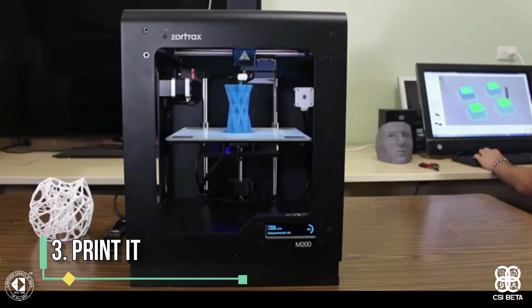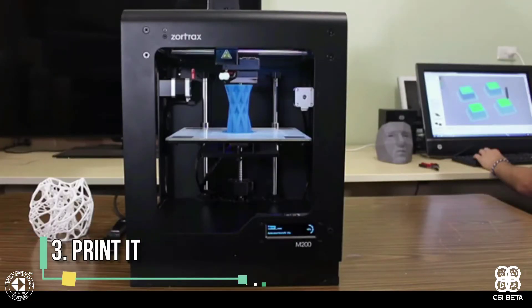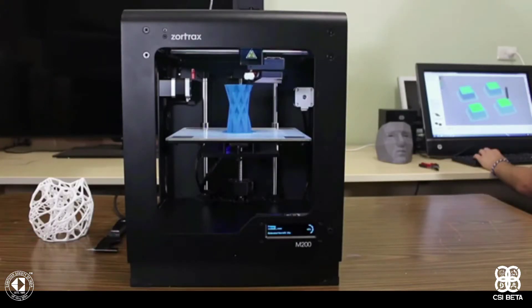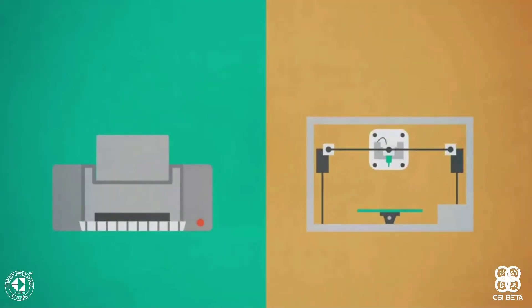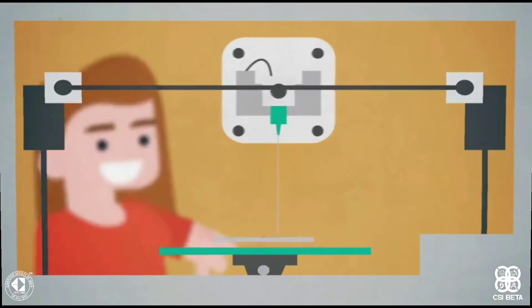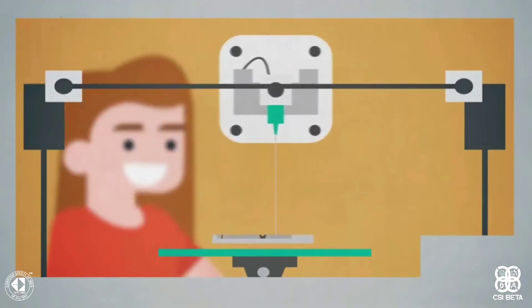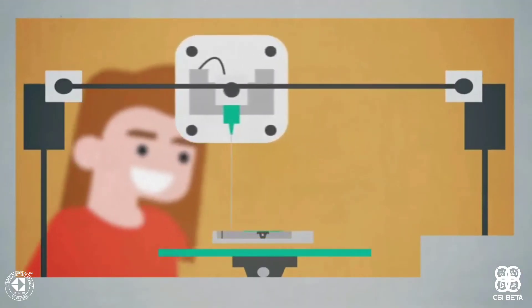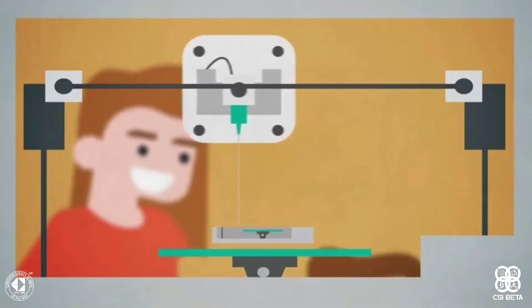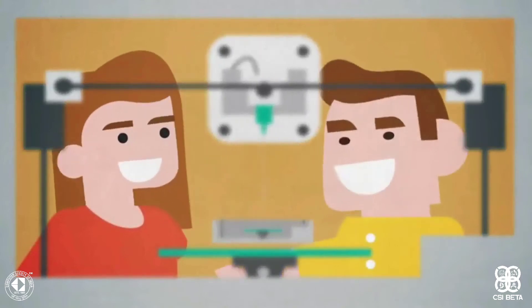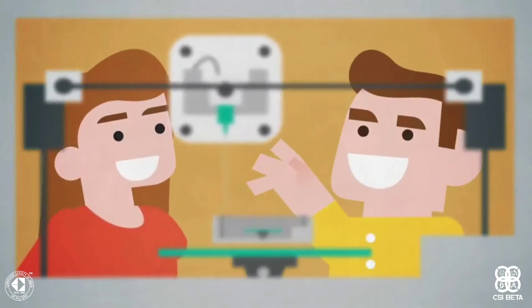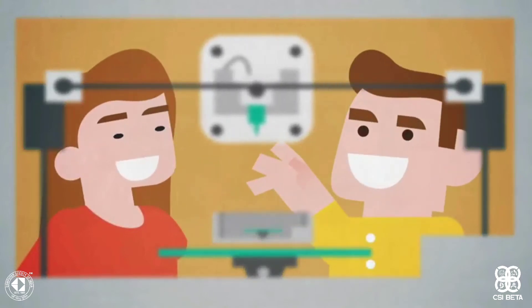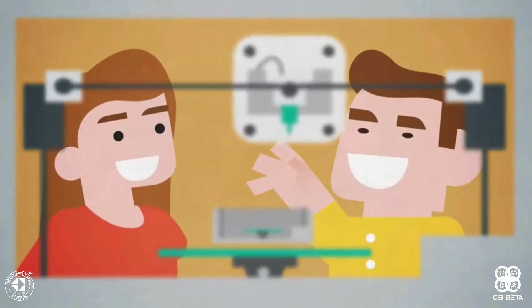Once the model is sliced, it's time to send it to the printer. The 3D printer works almost like a traditional inkjet printer, except here it also moves back and forth while dispensing the material, adding hundreds or even thousands of 2D prints on top of one another to make the three-dimensional object.